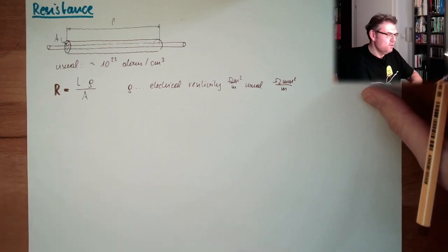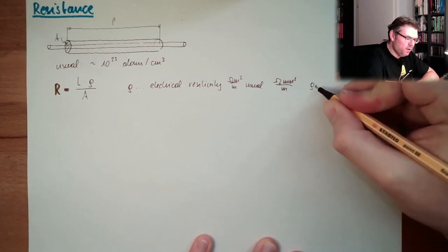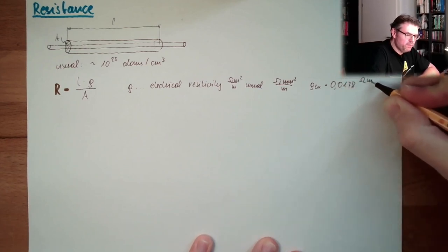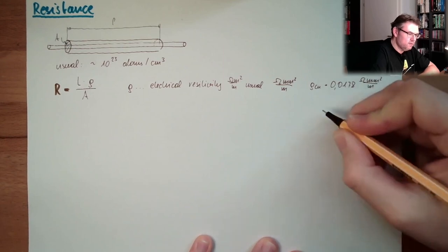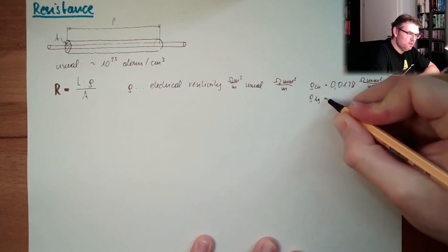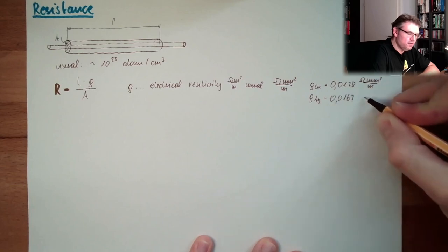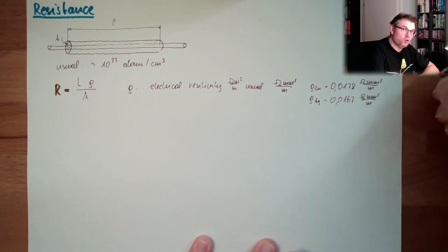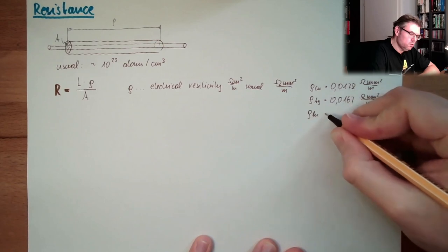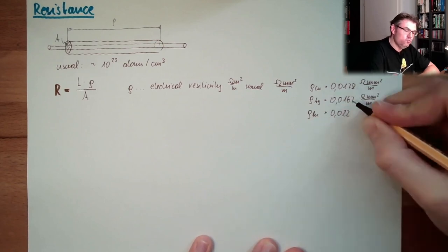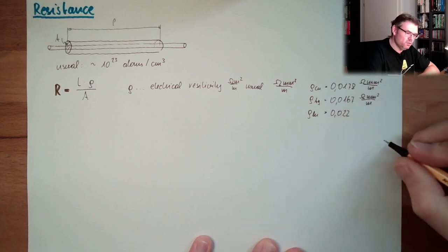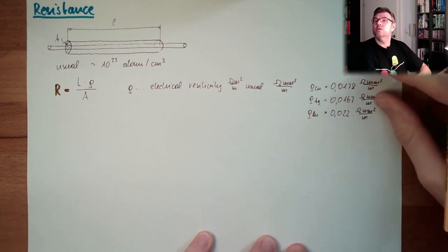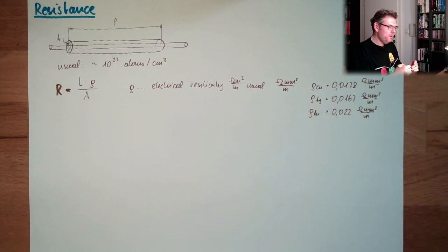For instance, copper. We have 0.0178 ohm square millimeter meter by meter. Silver. One very good conductor. Gold. Copper is much better than gold. So even if we could afford it, a gold wire is not desirable. All right. So that's the resistance.